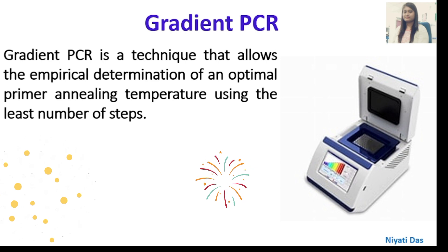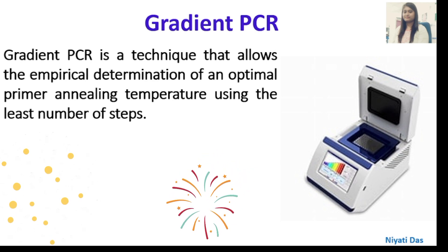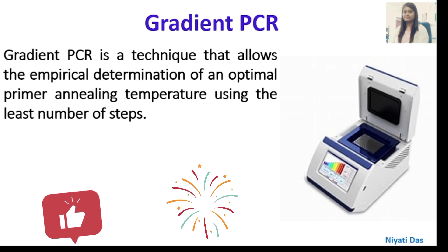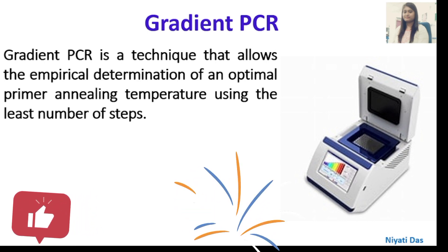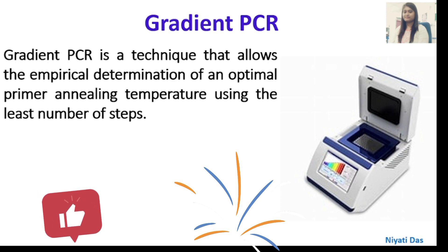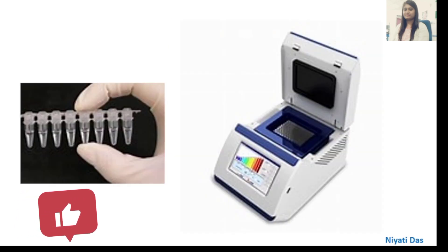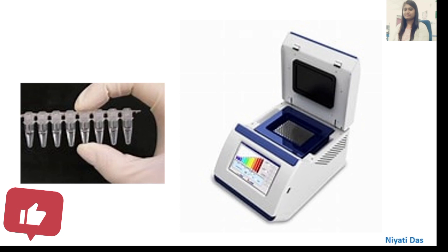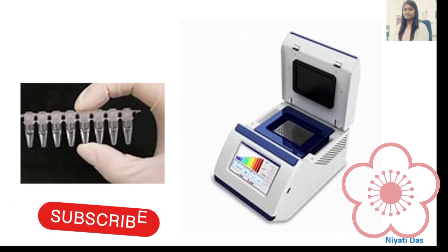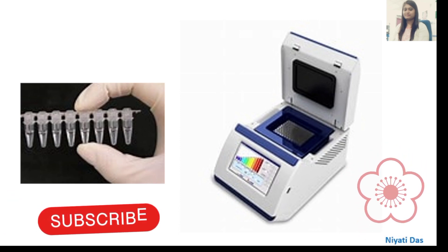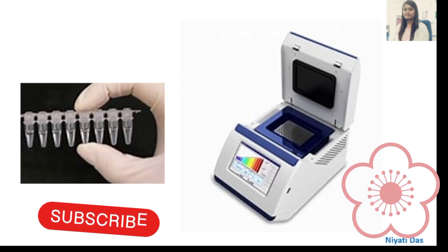Gradient PCR is a technique that allows the empirical determination of the optimal primer annealing temperature using the least number of steps, which gives specific amplification and good yield. The key variable is the temperature used in the primer annealing step.